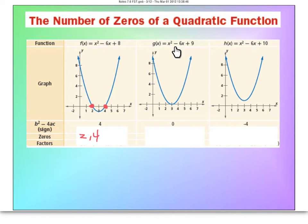If we look at the second one, we see that there's one zero—it looks like here at the number three. So I'm going to write that down. And if we look at this third one, we don't see it crossing the x-axis at all, so it looks like there are no zeros.